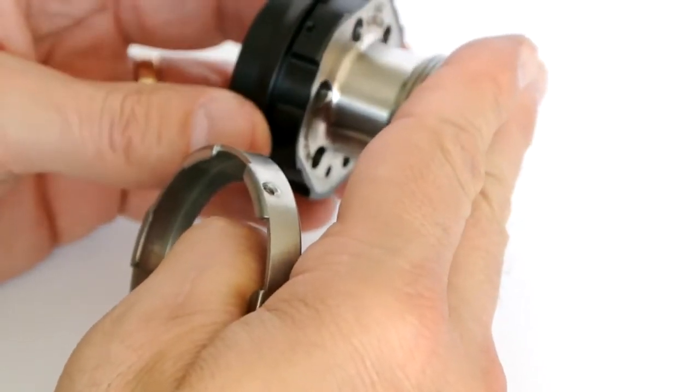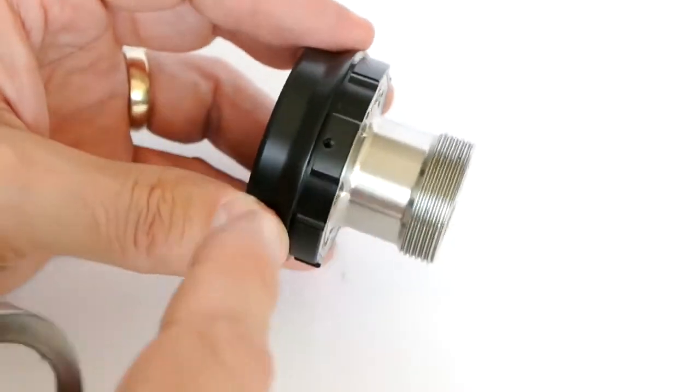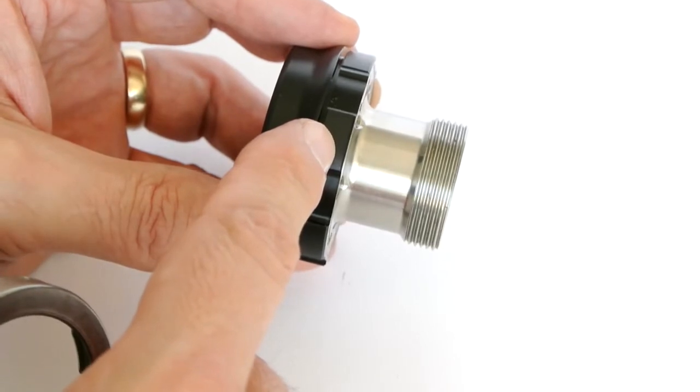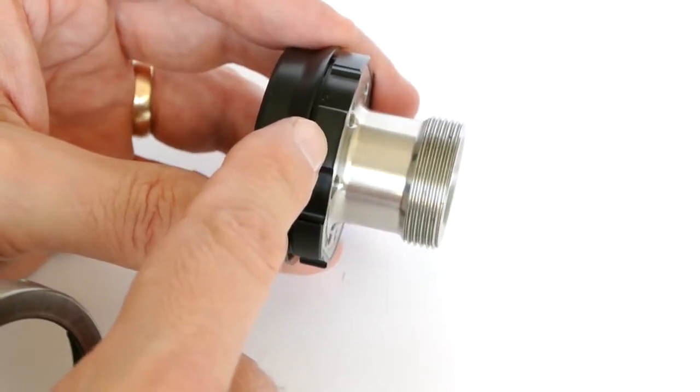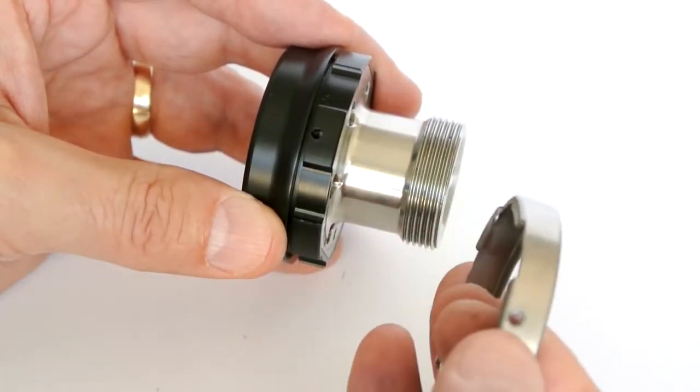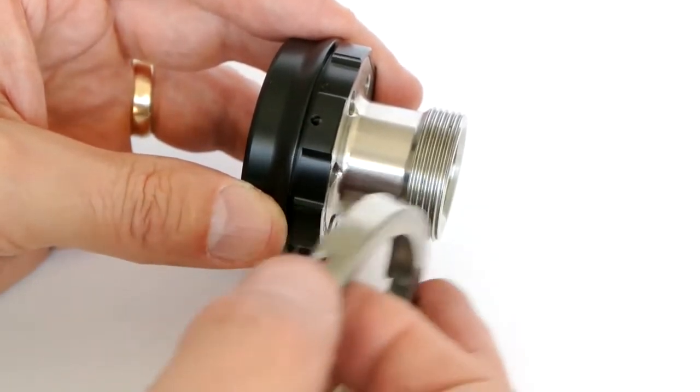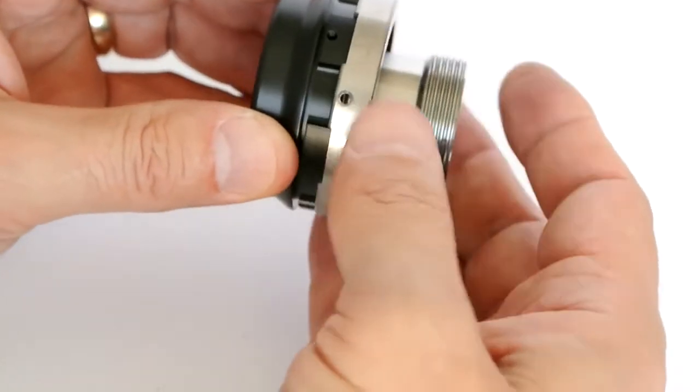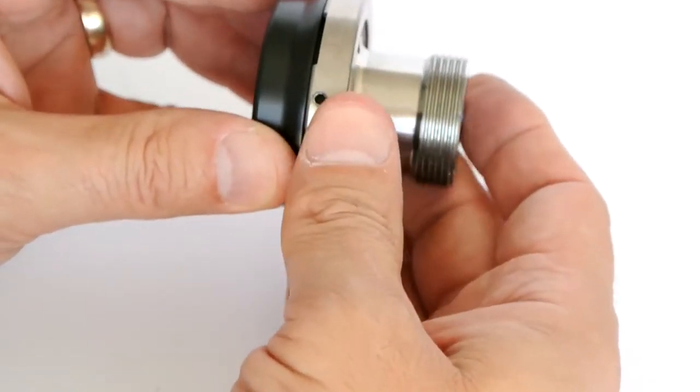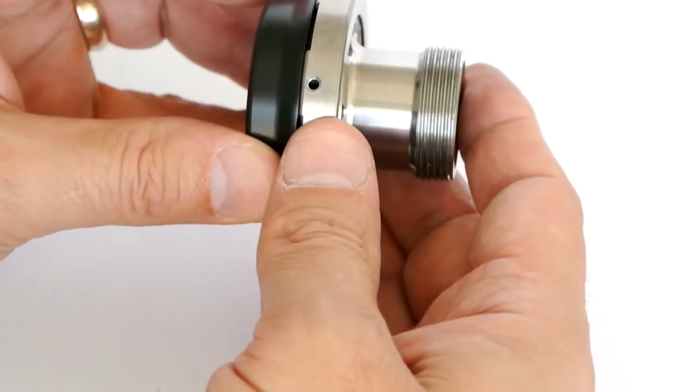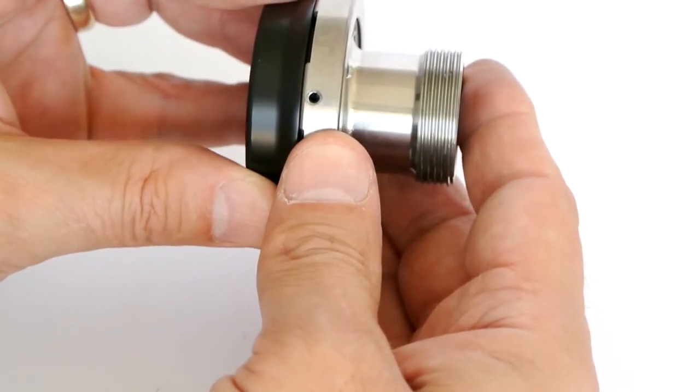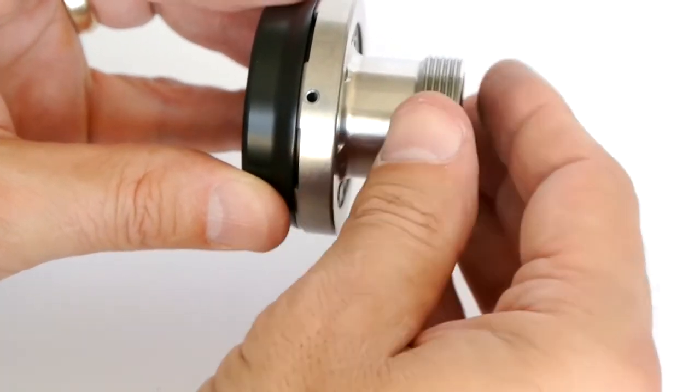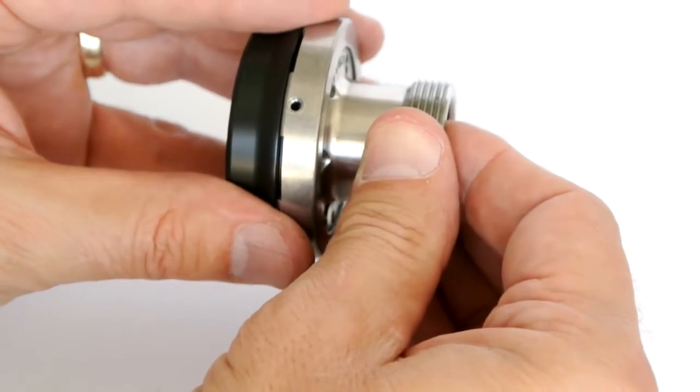Now we want to place the lock ring over the upper body. There's a hole in the shell, and there's a hole in the lock ring. And those two need to line up because that's where the locking screw engages. So I'll slide the tab on the lock ring down over, and then carefully rotate until the hole in the shell lines up with the hole in the lock ring.